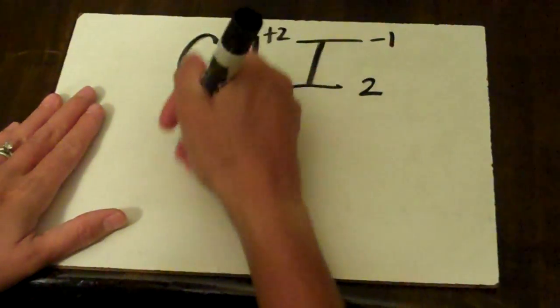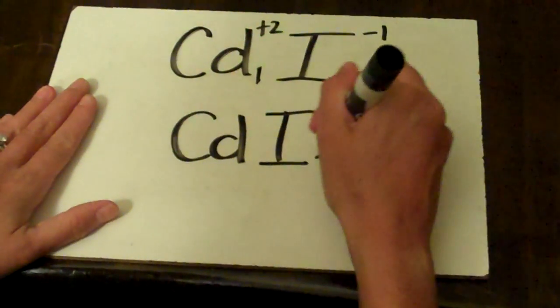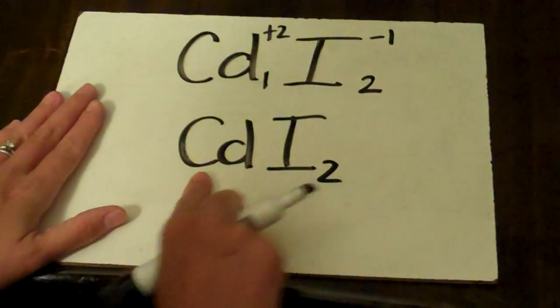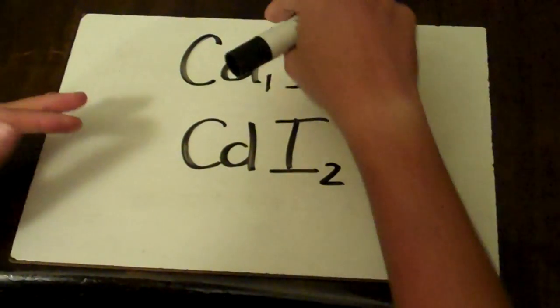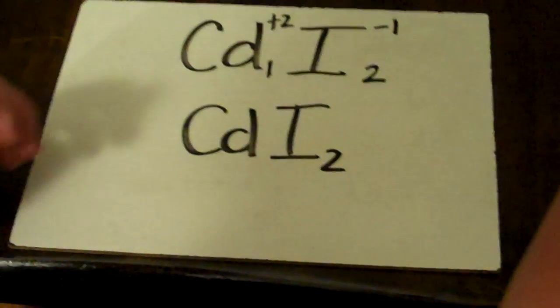Now when you rewrite this, the 1 is understood. So you don't need to bring that there. And this would be cadmium iodide. Obviously, these charges are going to balance out. We'll do one more.